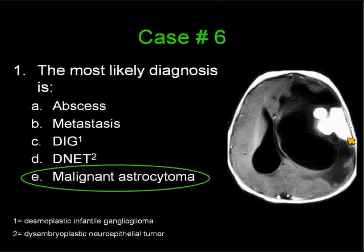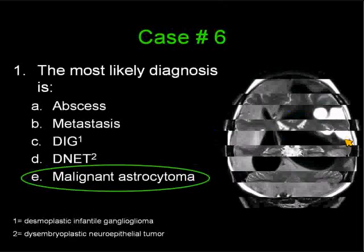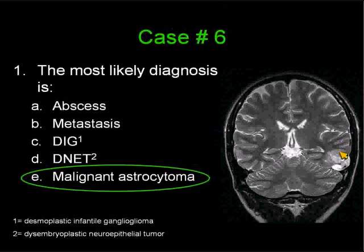I saw one case this year in which a tumor had spread entirely throughout the pial space. A DNET, which is what many of you considered, is generally a small cortical tumor in patients with chronic seizures. It tends to have overlying cortical dysplasia, may remodel the bone, and the underlying abnormality is generally said to have a microcystic appearance, although in this case it does not.